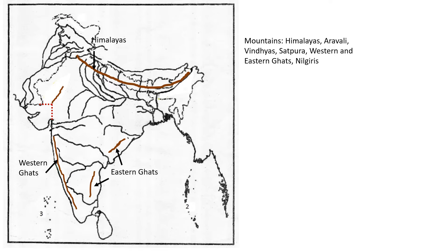Take an angle from the Gujarat coastal area and from that angle just draw a slanting line northward — that is Aravalli. Then Vindhya and Satpura: these are parallel to each other. Be careful they shouldn't touch the rivers, because the mountain is not on the river. So this is Vindhya and this is Satpura. Then in that small part we have a round shape — Nilgiris — that's the last one.